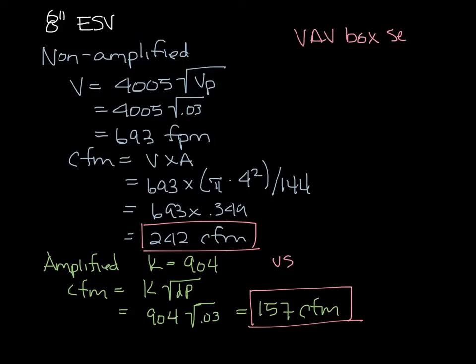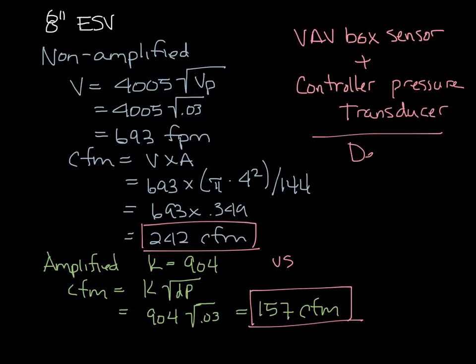It depends on the VAV box flow sensor and its amplification, and the control pressure transducer and how low it can read. So these two things determine the minimum controllable CFM of any given VAV box.